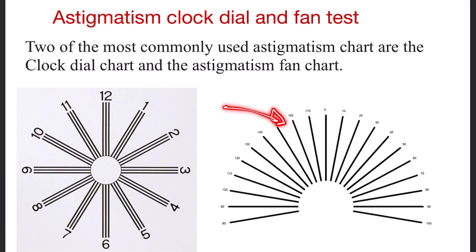So this astigmatic fan chart is going to give you more accurate results of the axis compared to the clock dial chart where the angular difference between two numbers is 30 degrees.